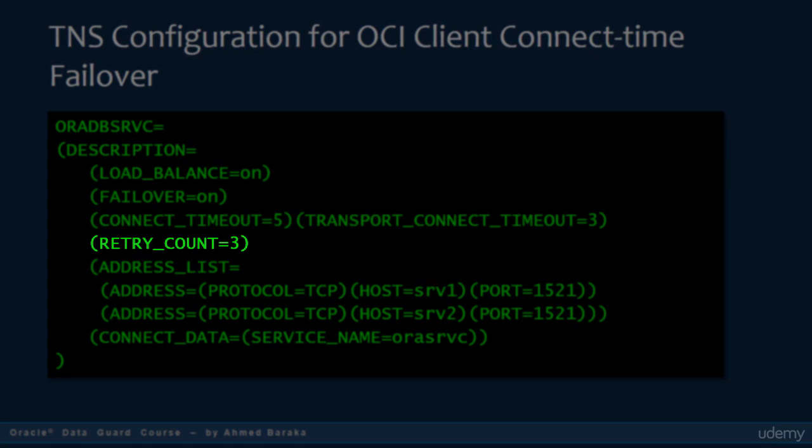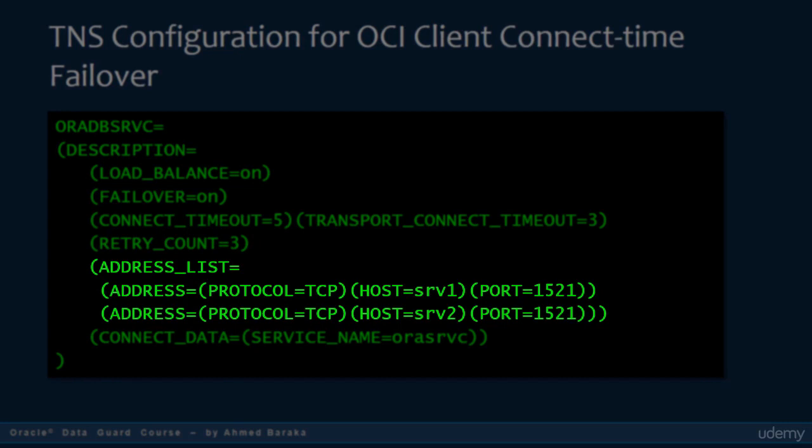The retry count parameter specifies the number of times the address list is traversed. For example, if you set this parameter to 3 and you have two hosts under the address list, the client will try to connect to the first host. If it fails, it will try the second host. If that fails, it will repeat the same connection attempts twice more. If all attempts fail, an error will be returned to the client. Under the address list, you will list all the servers that host your DataGuard configuration databases.